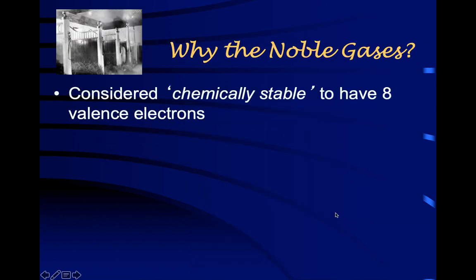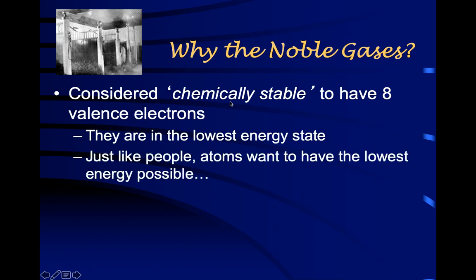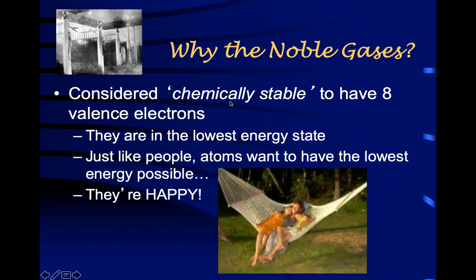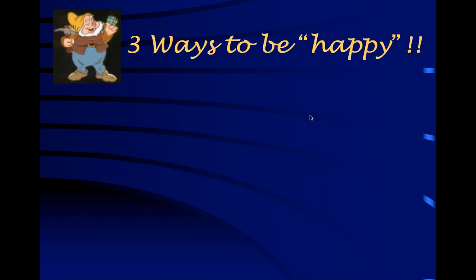Why are the noble gases special? They have eight valence electrons, so they are already stable — in their lowest energy state. Like people, they want to be in the lowest energy possible. They're considered stable; they have the perfect number of valence electrons, no more, no less. That means they don't want to combine or be with other atoms — they just want to hang out by themselves. That's where the term 'noble' came from.